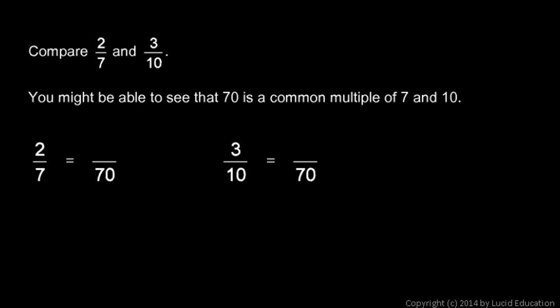In this example, we're told to compare two-sevenths and three-tenths, and you might be able to see that the number 70 is a common multiple of the 7 and the 10.